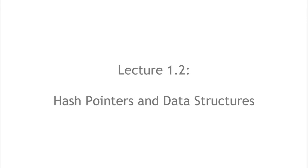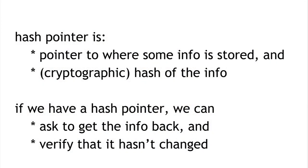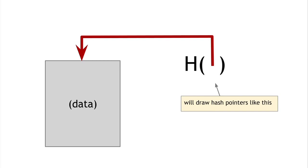In section 1.2, we're going to talk about hash pointers and their applications. A hash pointer is a data structure where we take a pointer to where some information is stored and also store a cryptographic hash of that information. Whereas a regular pointer gives you a way to retrieve information, a hash pointer lets you get the information back and verify it hasn't changed. So a hash pointer tells us where something is and what its value was.